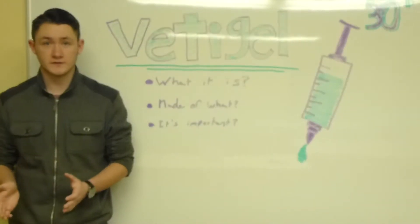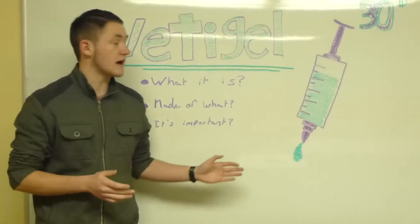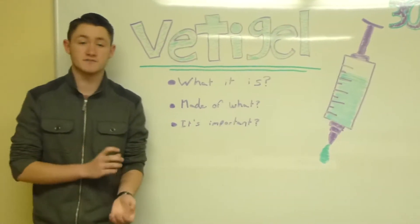And I'm sure you're thinking, why is that important? Well, what we can see is Vettigel has many uses, one of which is stopping massive bleeding.